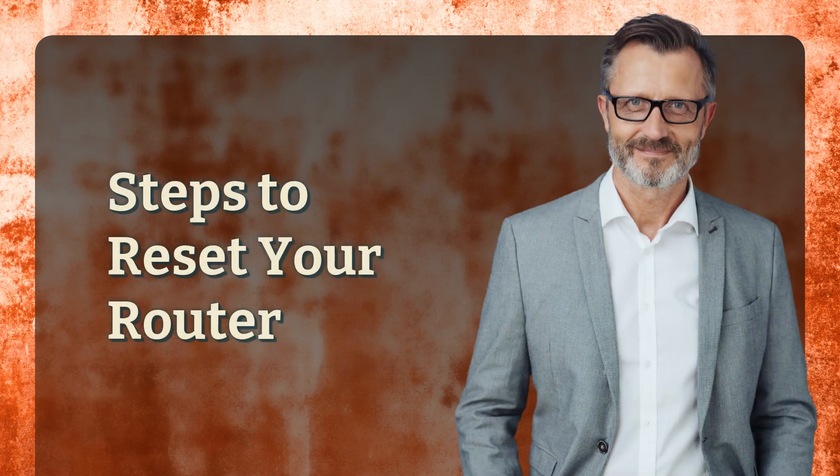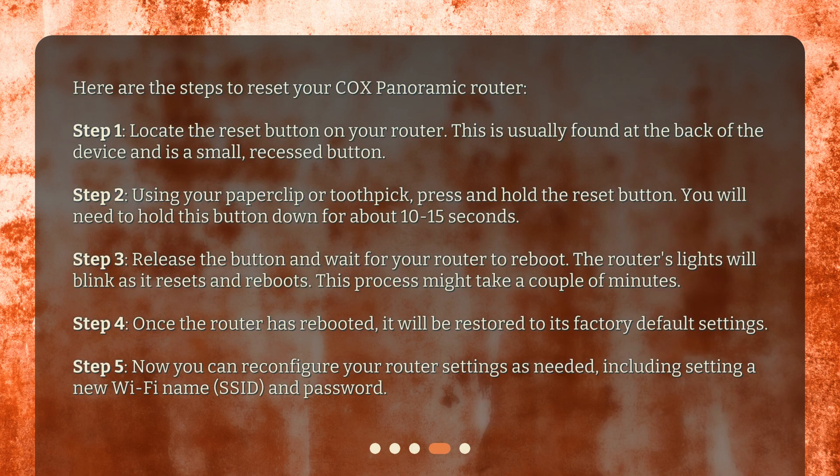Here are the steps to reset your Cox Panoramic Router. Step 1: Locate the reset button on your router. This is usually found at the back of the device and is a small, recessed button. Step 2: Using your paper clip or toothpick, press and hold the reset button. You will need to hold this button down for about 10 to 15 seconds.